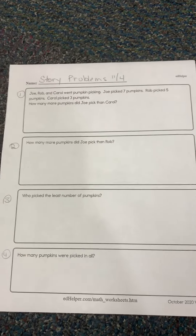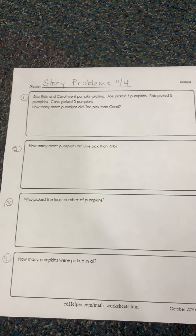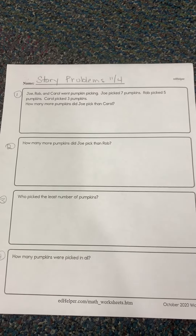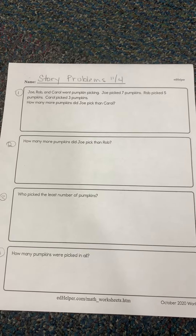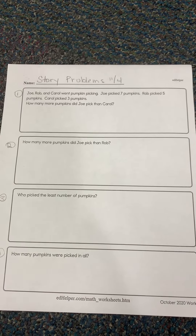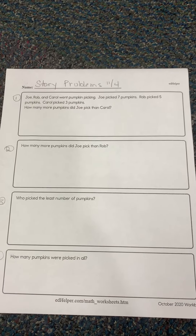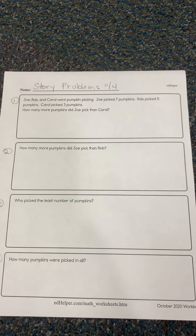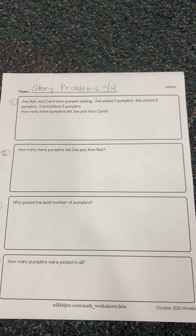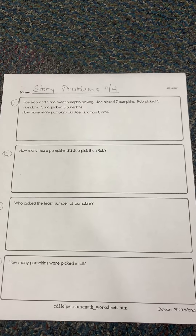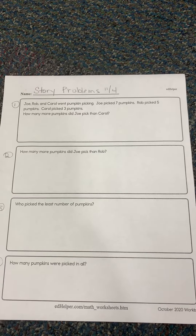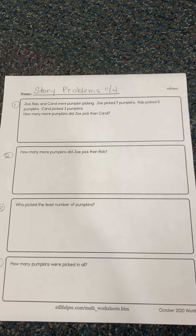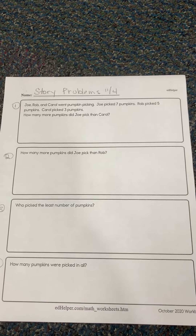Story problems for today — I'll just read them to you. Joe, Rob, and Carol went pumpkin picking. Joe picked seven pumpkins, Rob picked five pumpkins, and Carol picked three pumpkins.